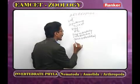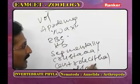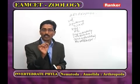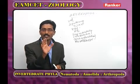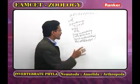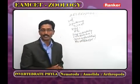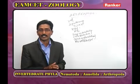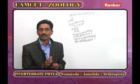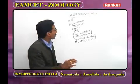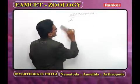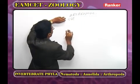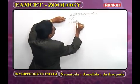In Arthropoda, larval stages are present during development, so development is indirect. Phylum Arthropoda is classified into three subphyla: Trilobita, Chelicerata, and Mandibulata. In Trilobita, members are exclusively marine; they were present in the Palaeozoic era. The body is divided into three lobes: head, thorax, and abdomen (pygidium). Appendages are biramous — each appendage divides into two. Example: Triarthrus and Dalmanites.